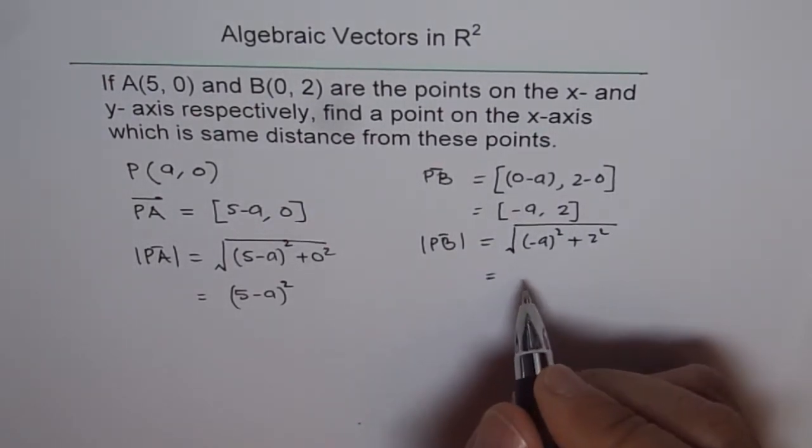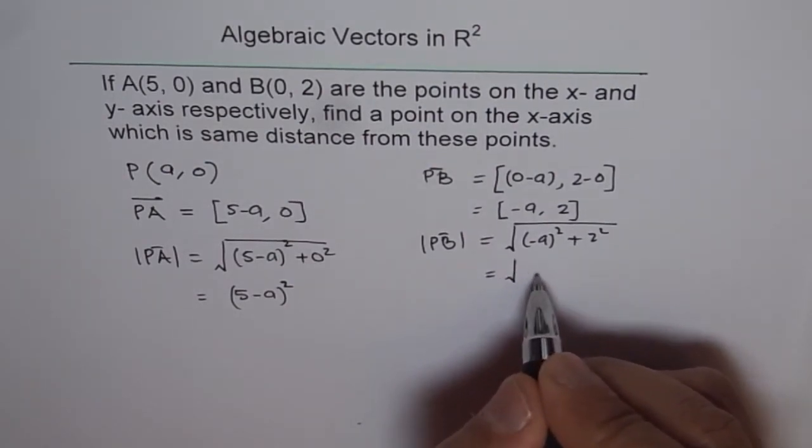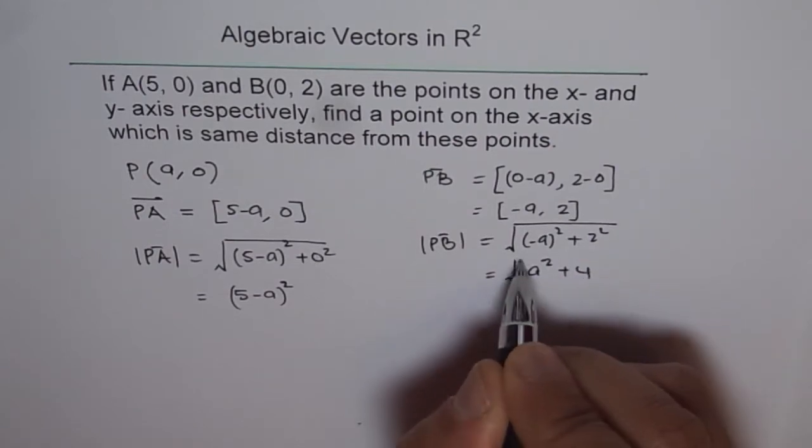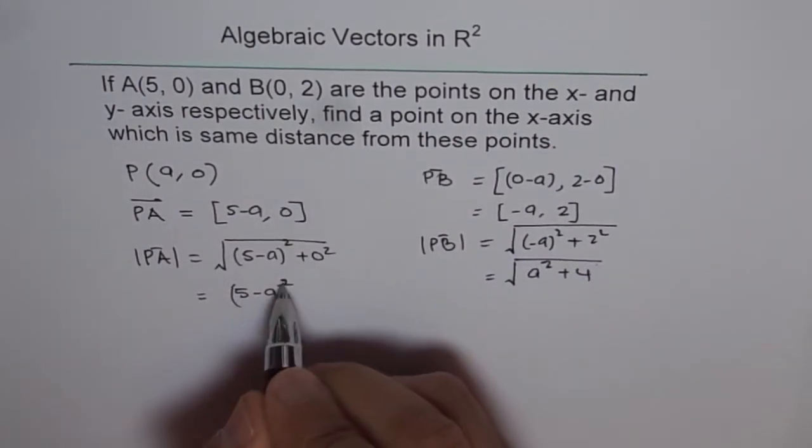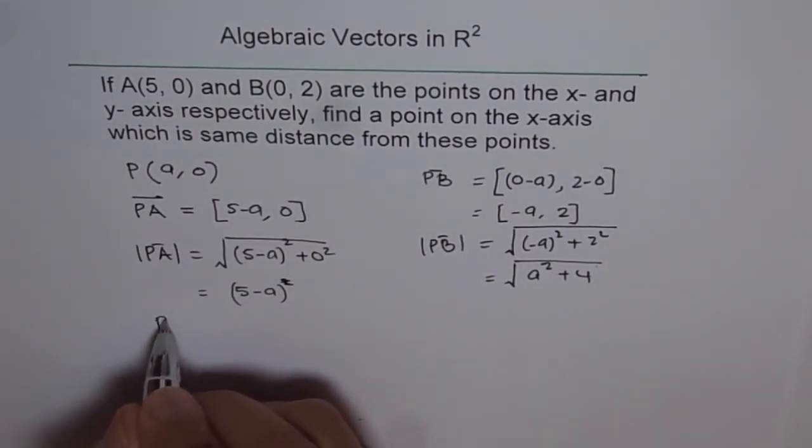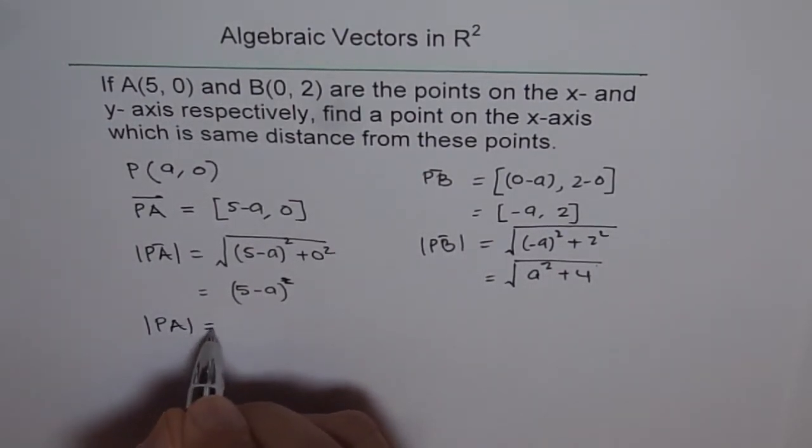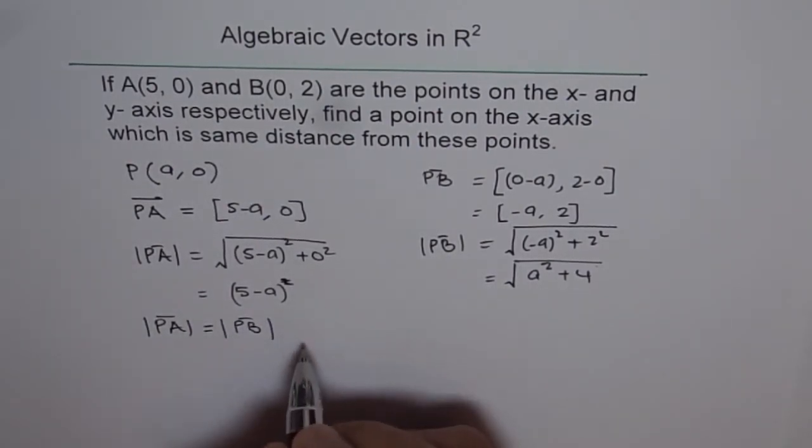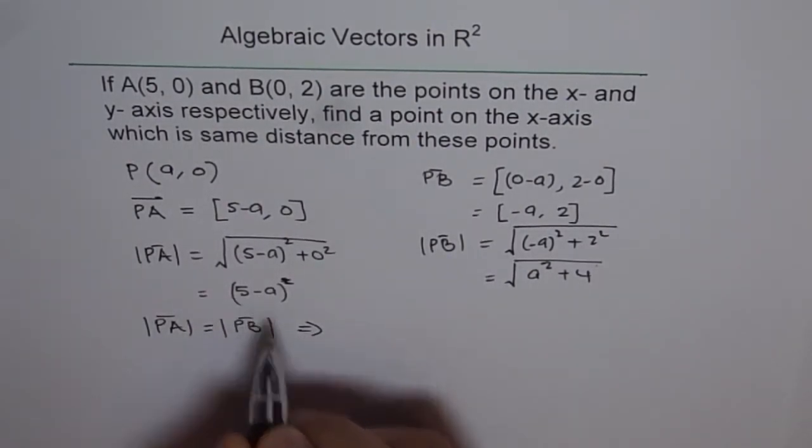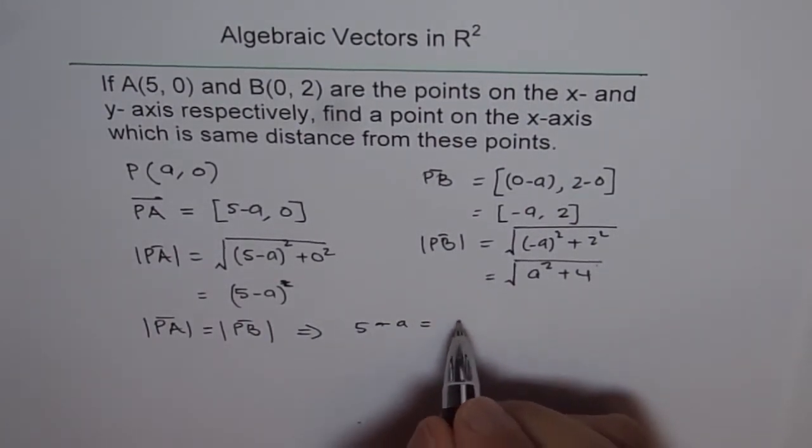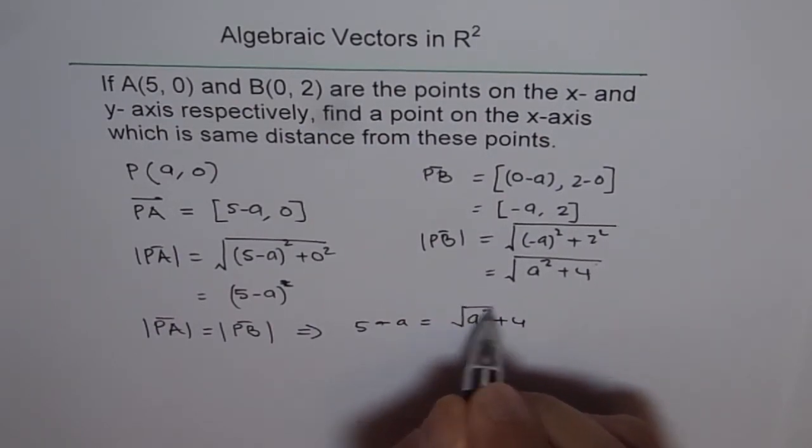That is square root of A² plus 4. Now if PA magnitude is equal to the magnitude of PB, in that case (5-A) should be equal to square root of A² plus 4.